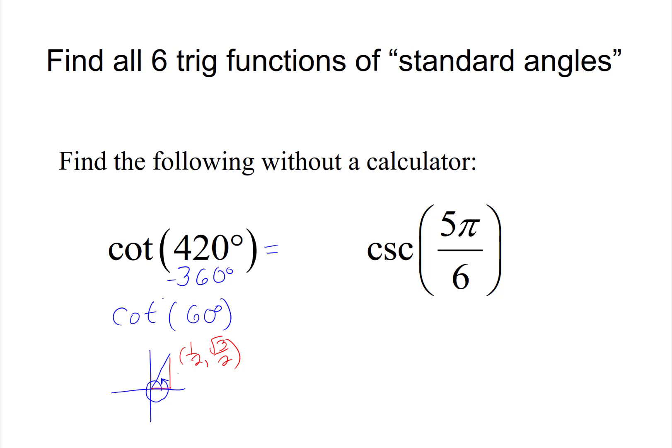Cotangent is the reciprocal of tangent. Tangent is the sine of the angle over cosine, so when we flip that over we want cosine, which is the x value, divided by the sine value, which is √3/2.